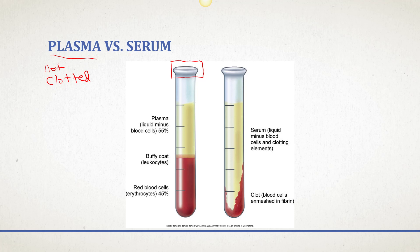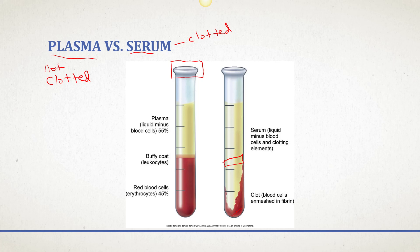Serum, however, has clotted. They take the blood sample, put it into the tube, and let it sit for 20 minutes. A solid clot will form. There's often a gel-like layer at the bottom of the tube so that when they centrifuge it, the gel sits on top of the clot and the serum is on top, giving a clean serum for testing.